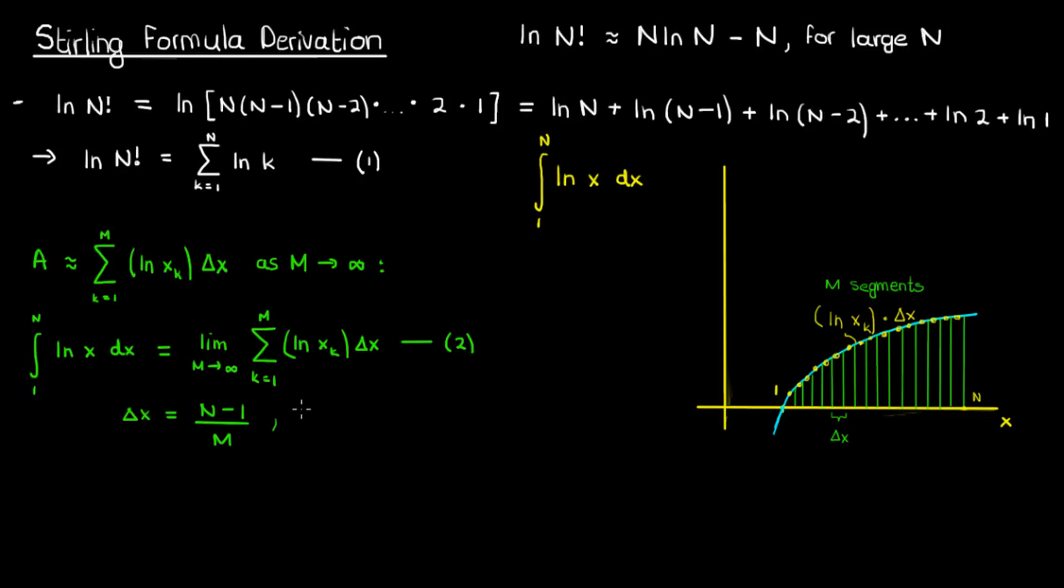In addition, you can write x_k, the value of x in the kth segment, as the initial value of the interval, which is 1, plus the interval you're considering, which is k, times the length of the individual intervals, which is delta x. We can plug delta x into x_k and get 1 plus k times (n-1)/m.